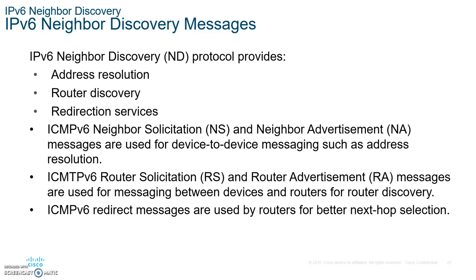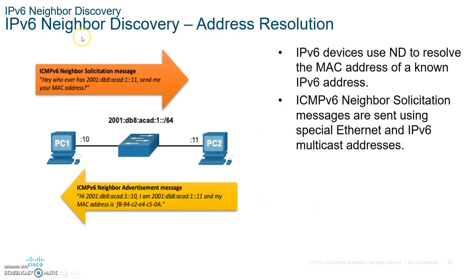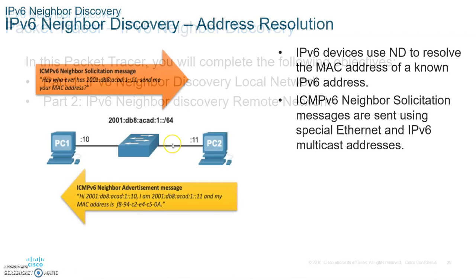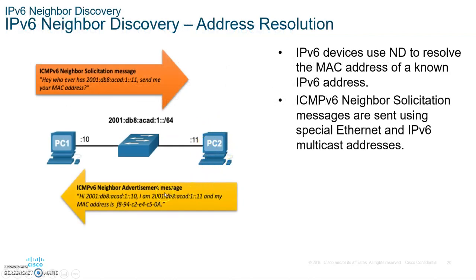So here, this host is doing a neighbor solicitation — hey, whoever has this IP address, give me your MAC. And the other host does a neighbor advertisement to send back his MAC address. Then you send the frame and they'll be able to receive it. It works exactly the same way as ARP.